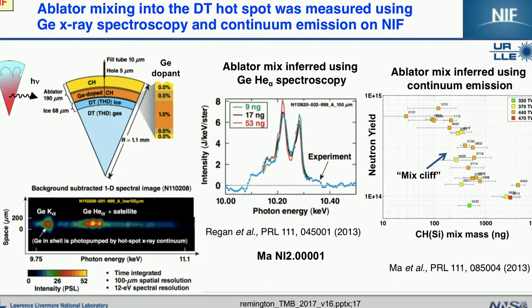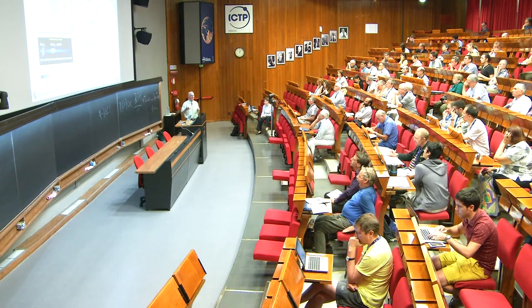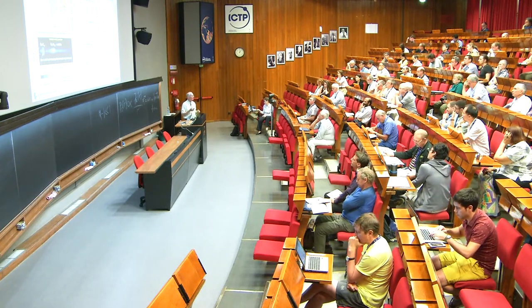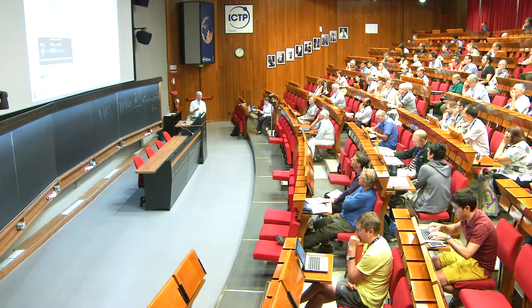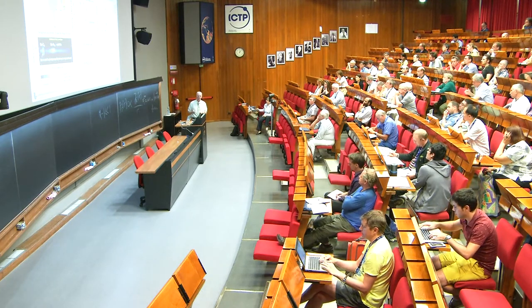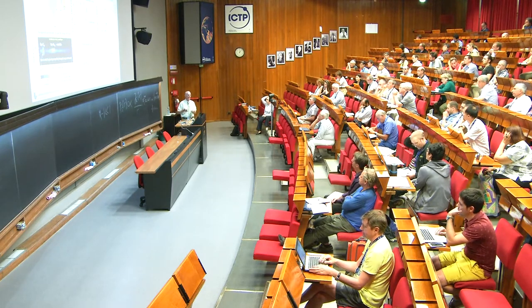We can analyze the spectra to back out how much material got into the hot spot and how hot it got, and also back out the effects of the mixing. When you plot neutron yield versus silicon-doped carbon plastic mixed mass, you see that when the mixed mass gets up around several hundred nanograms, the nuclear yield just drops and plummets. We called that the 'mix cliff.' This was a big step forward — we realized we have a mix problem that's killing performance, so we have to do careful science experiments to quantify it and learn how to control it while still meeting ignition criteria.